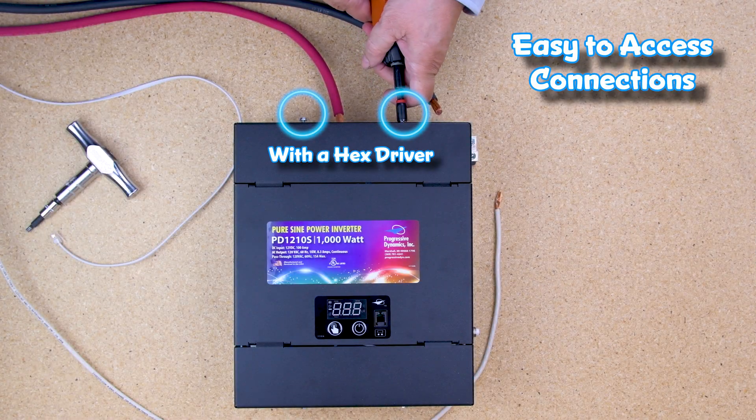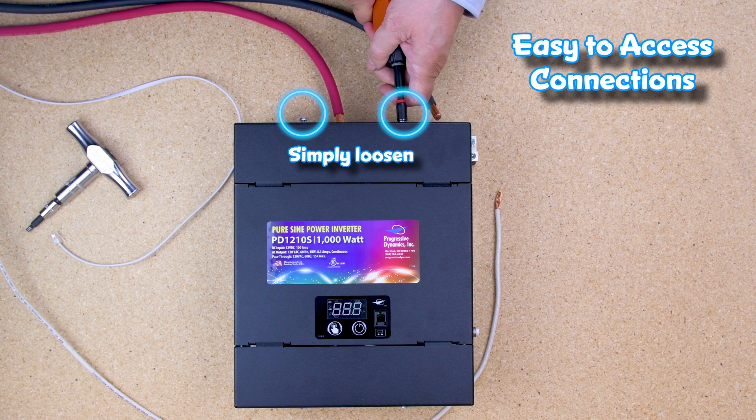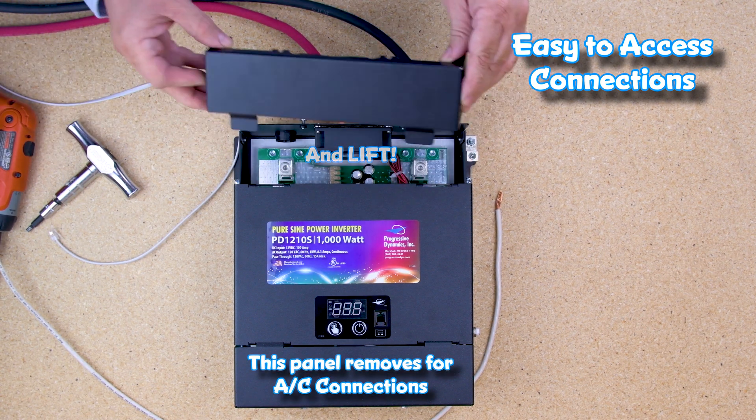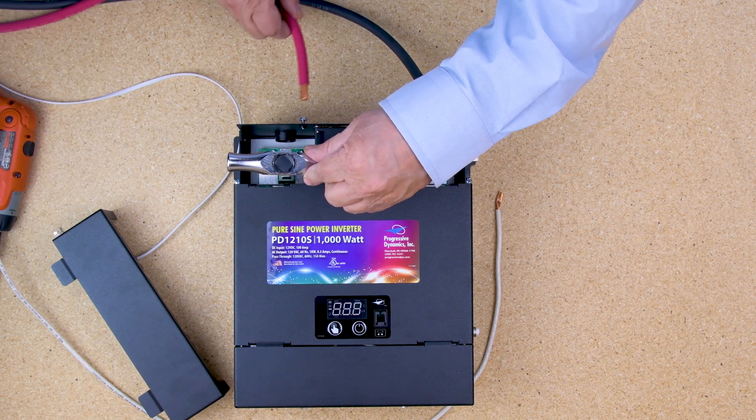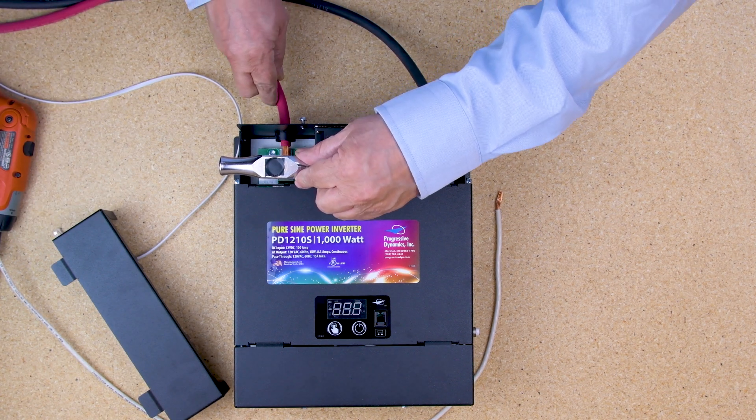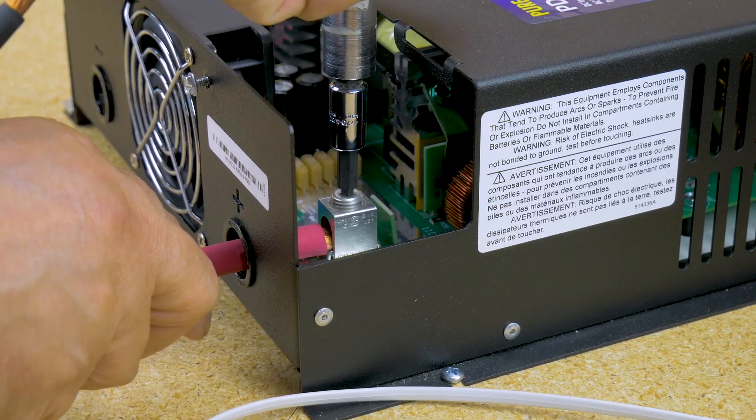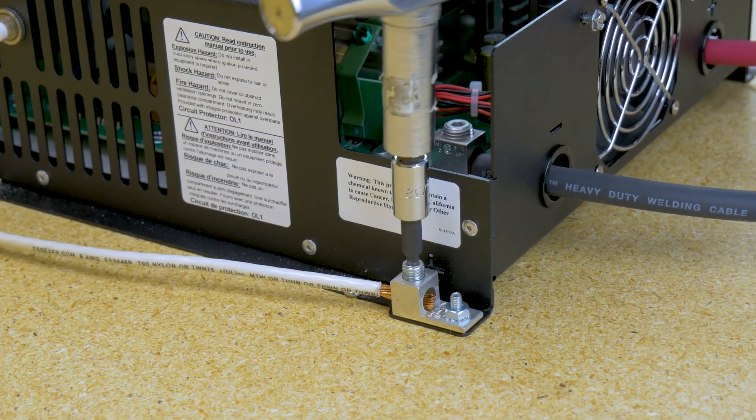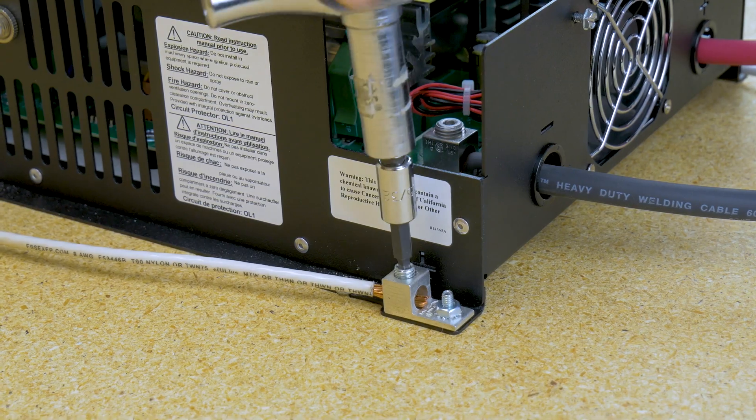AC and DC connections are easily accessible from the ends with a simple loosening of two screws. DC connections are easily fed into the inverter and tightened down with an Allen wrench. Earth-ground connection is made easy from the outside of the inverter.